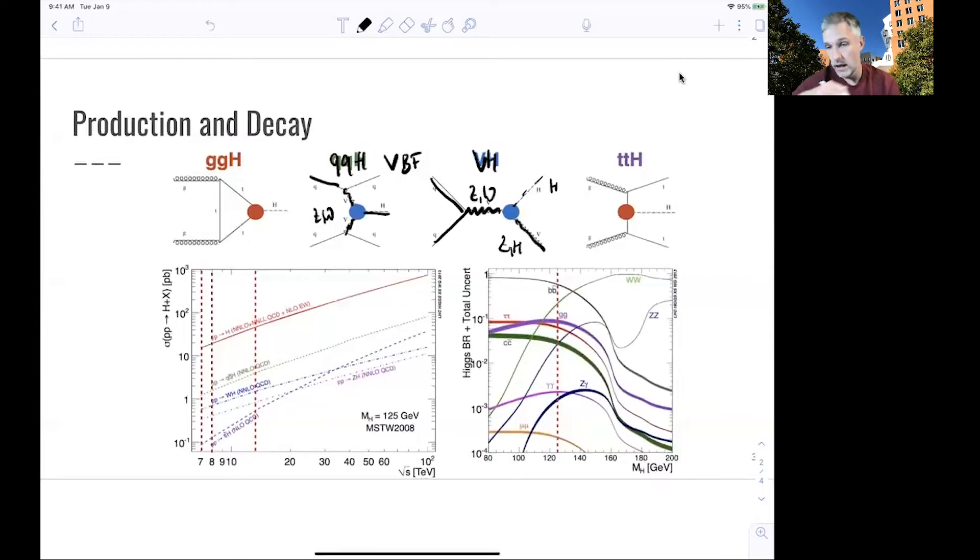A very exciting one is the last one, where the Higgs boson is produced in association with two top quarks. Remember, the top quark has a mass of 175 GeV, and the Higgs boson is 125 GeV. With two top quarks, the scale of this event is on the order of 500 GeV.